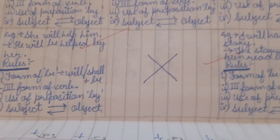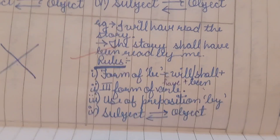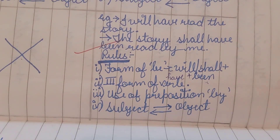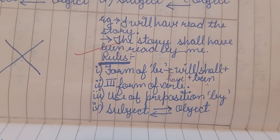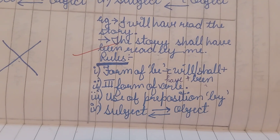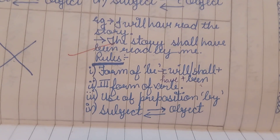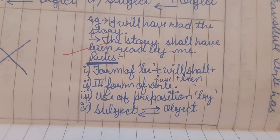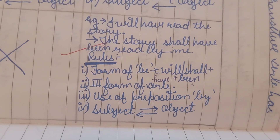As mentioned, Future Continuous tense will not be changed from active to passive. Moving on to Future Perfect tense, the example is: 'I will have read the story.' Changing it to passive: 'The story will have been read by me.' The form of 'be' used here is 'will/shall' plus 'have' plus 'been,' followed by the third form of verb, use of preposition 'by,' and the subject becoming the object.